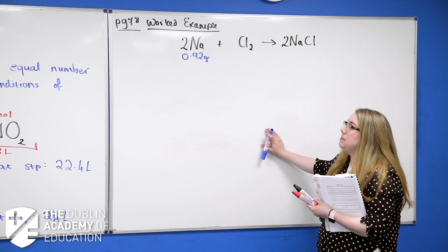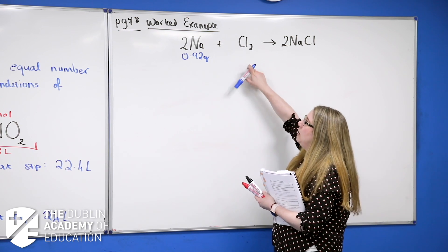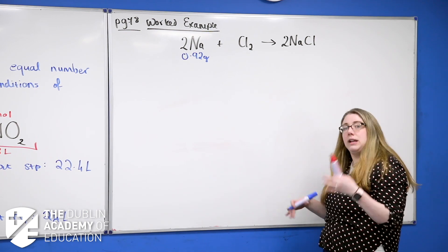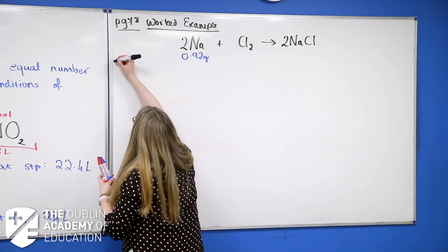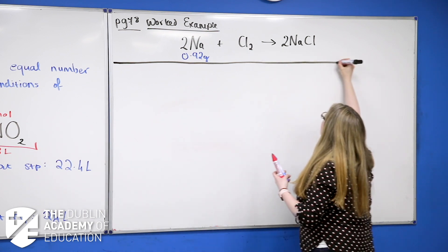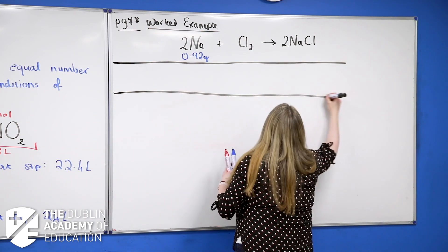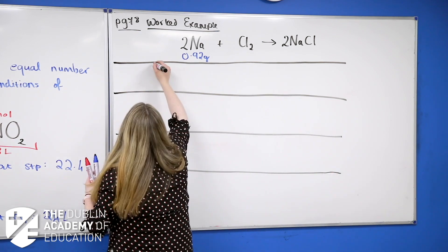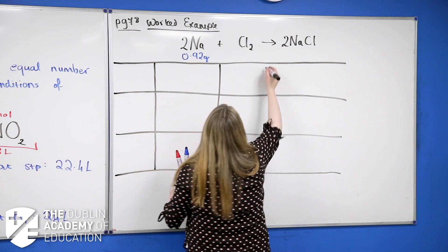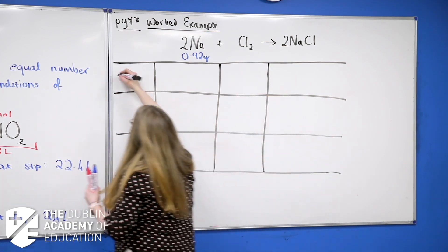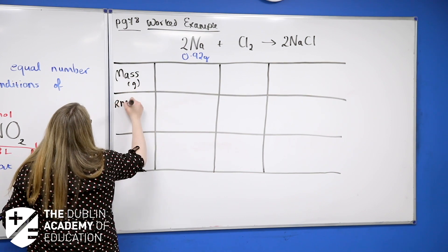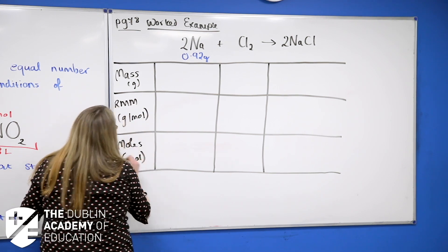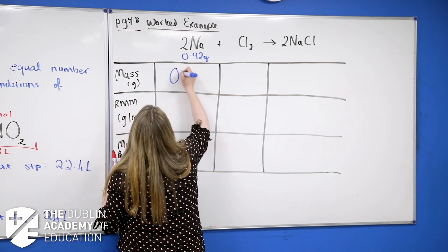You'll have to plan this in a couple of steps because I'm given the mass of sodium but want the volume of chlorine — this links back to stoichiometry from earlier in Unit 3 relating moles in a question. I always use a table when working with moles on a balanced equation. My table has: mass in grams, RMM in grams per mole, and moles at the bottom. We're told it was 0.92 grams of sodium.